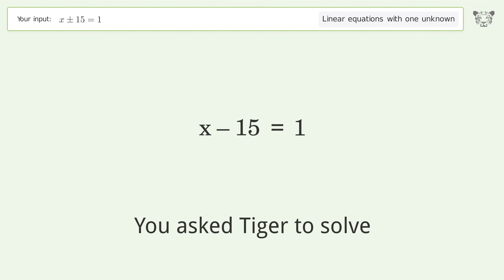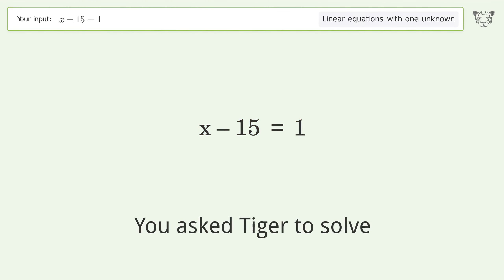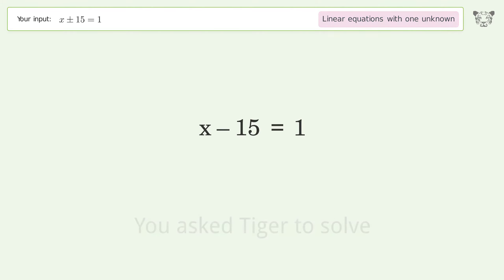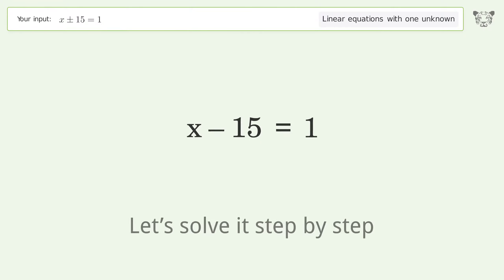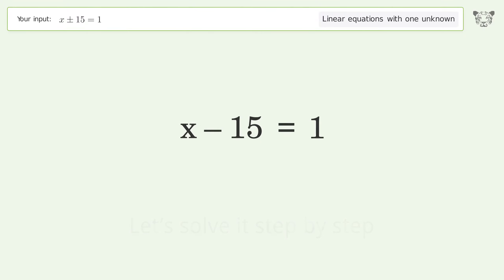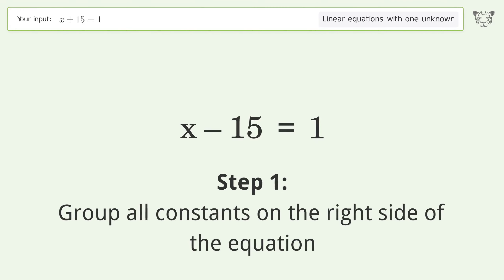Tiger Algebra solves the linear equation with one unknown x + -15 = 1. The final result is x equals 16. Let's solve it step by step: group all constants on the right side of the equation.